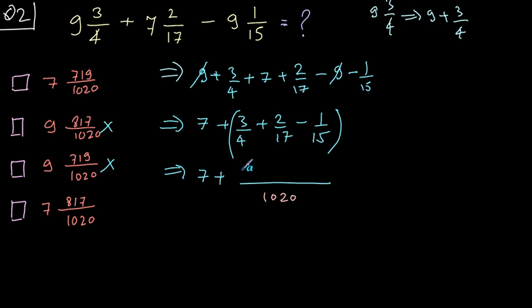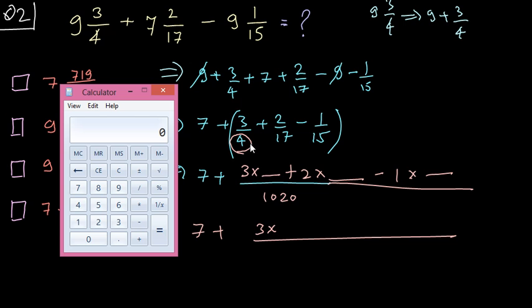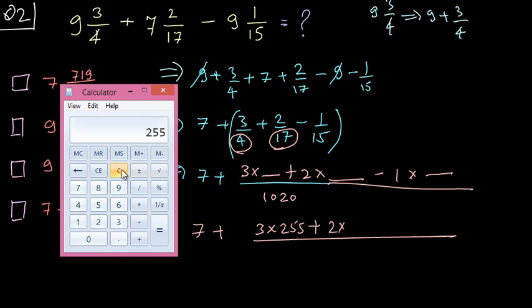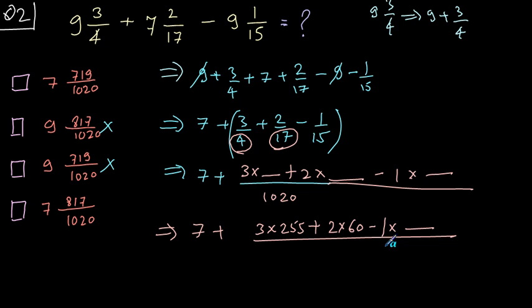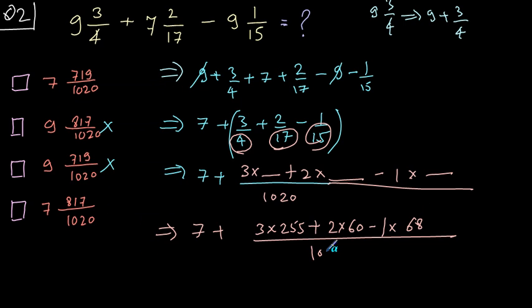Now, you have to solve the numerator. This is going to be 3 into something else plus 2 into something else minus 1 into something else. It's going to be 7 plus, 3 into how many times 4 is 1020? Let me bring up the calculator here. 1020 divided by 4, you get 255. Plus 2 into how many times 17 is 1020? 1020 divided by 17 is equal to 60 minus 1 into how many times 15 is 1020. 1020 divided by 15 is equal to 68 divided by 1020.